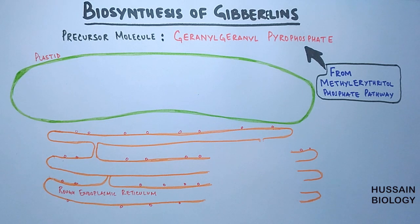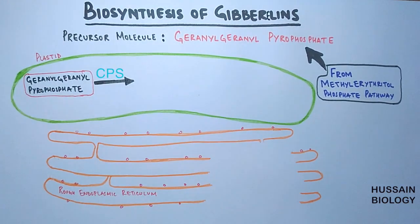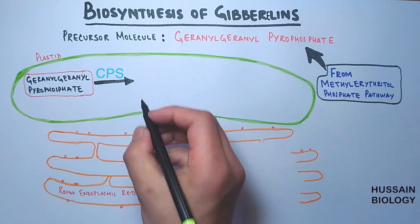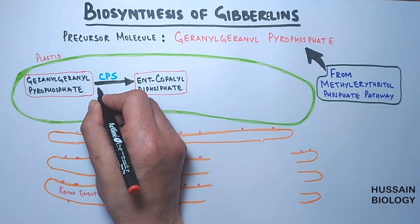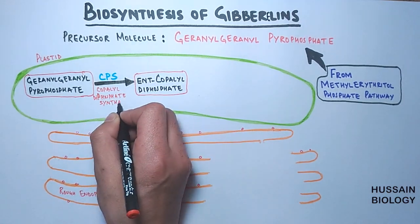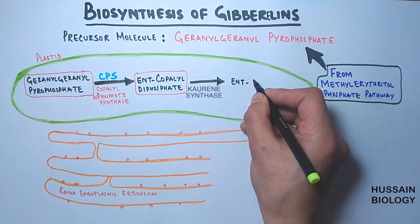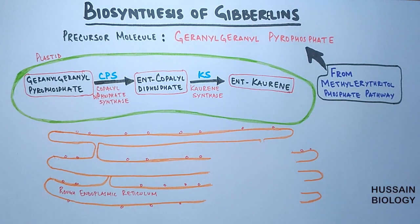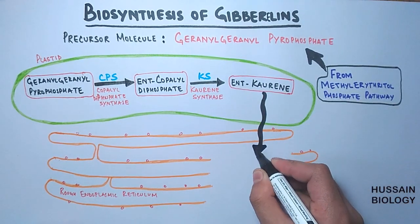In the plastids, the first biochemical reaction occurs when geranylgeranyl pyrophosphate is acted upon by the CPS enzyme — copalyl diphosphate synthase — and is converted into ent-copalyl diphosphate. This copalyl diphosphate is then acted upon by the KS enzyme, kaurene synthase, and is converted into ent-kaurene. To make gibberellins from ent-kaurene, the enzymes needed are present in the rough endoplasmic reticulum.